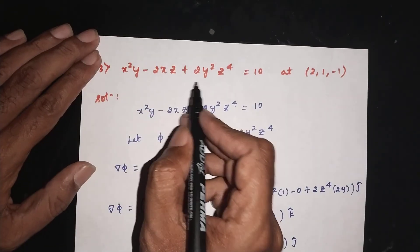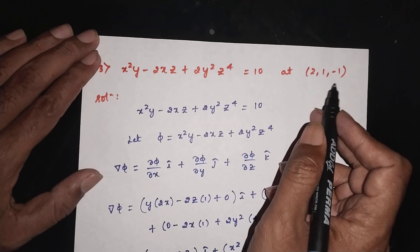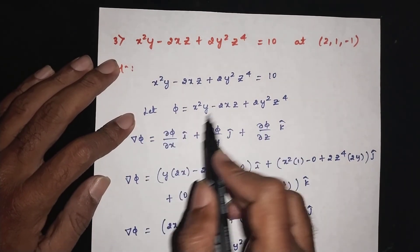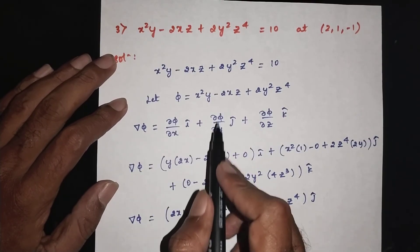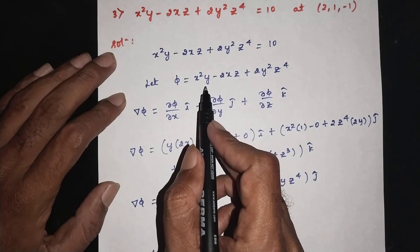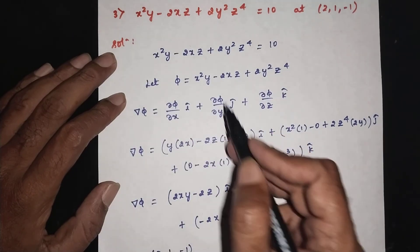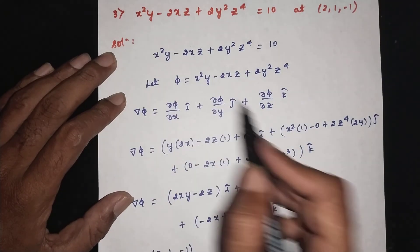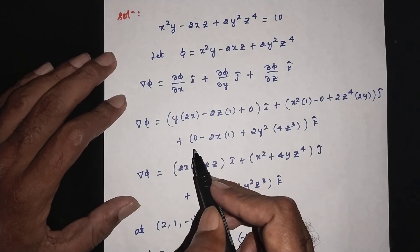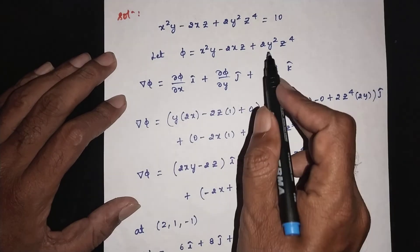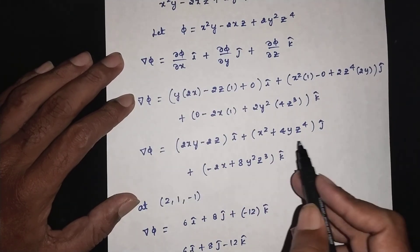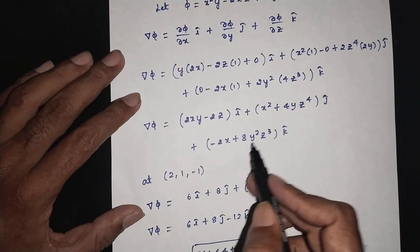Recap: x squared y minus 2xz plus 2y squared z to the power 4 equals 10, at point (2, 1, -1). Differentiating with respect to x: 2xy minus 2z equals the x-component. With respect to y: x squared into 1 plus 2z to the power 4 into 2y. With respect to z: minus 2x, and 2y squared into 4z cubed.